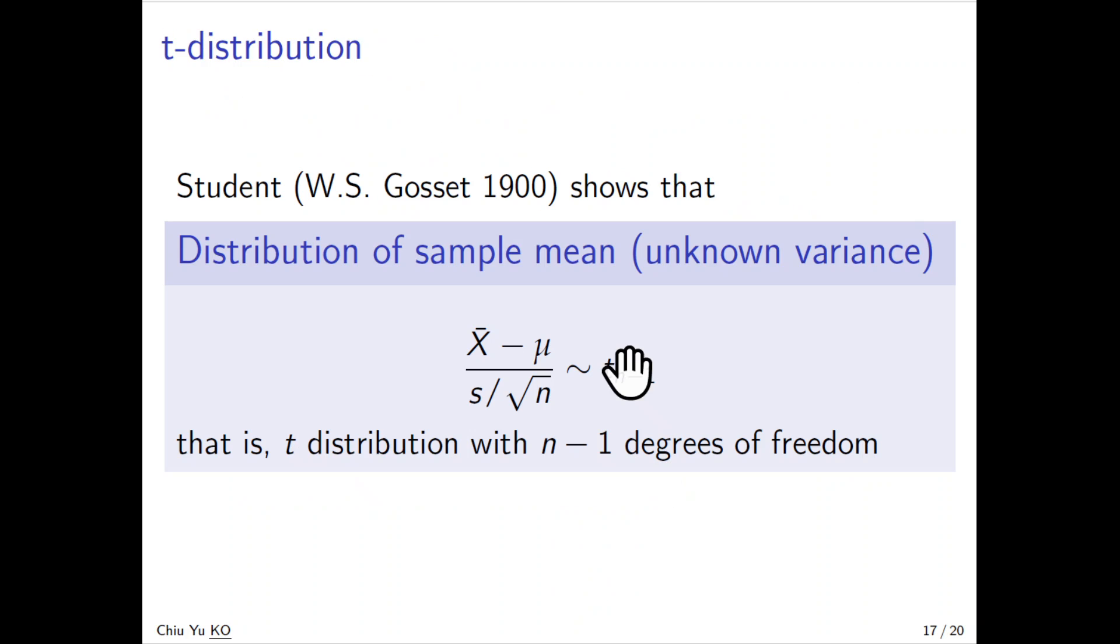This problem has been solved by a statistician under the pseudonym Student. That's why we learn the Student's t-distribution. This follows the t-distribution with degrees of freedom n-1.